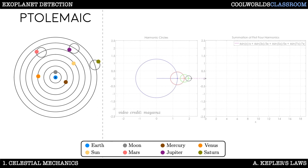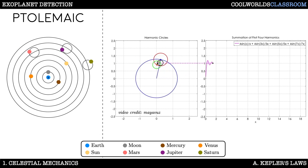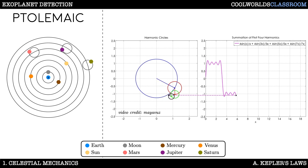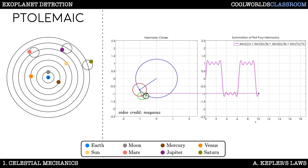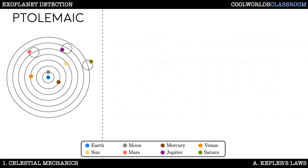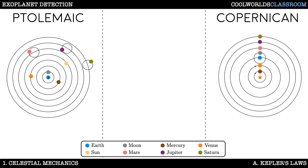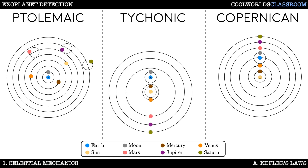A useful way to think about these epicycles is in terms of Fourier theory. With each addition of an epicycle, we are essentially adding another term to a Fourier series expansion. Since any periodic function can be approximated by a Fourier series, this practice will eventually lead to good fits, but it's also somewhat ad hoc. The alternative was, of course, the heliocentric model championed by Copernicus, with the sun placed near the centre and planets orbiting on perfect circles. It's also interesting to note that Tycho himself proposed a kind of hybrid model that tried to mix the two with the Earth back at the centre.